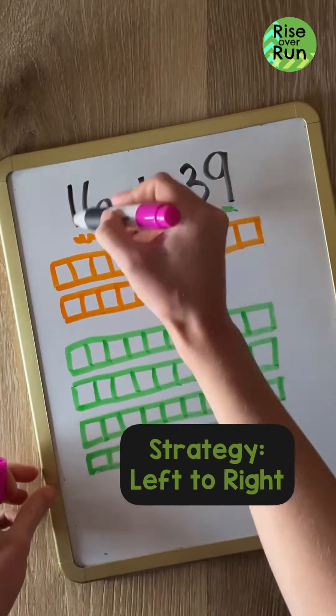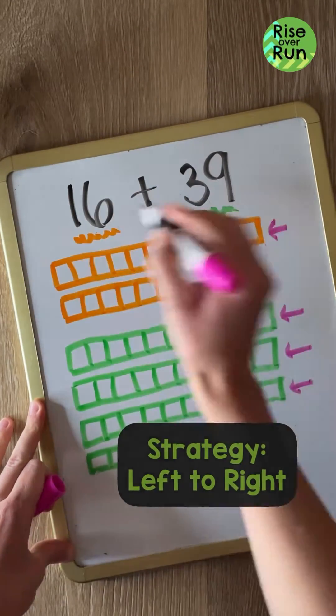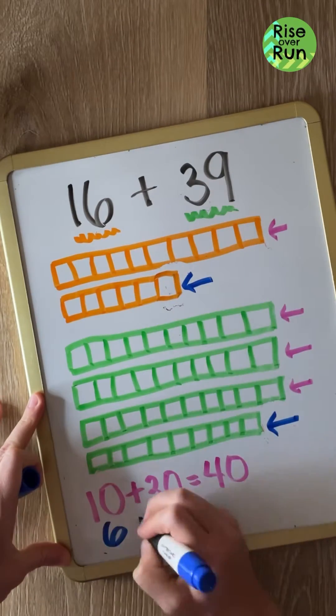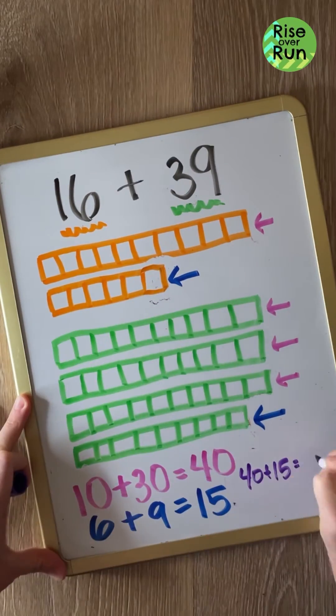Another strategy is adding left to right. We look in the tens place and see 10 plus 30 equals 40. In the ones place we have 6 plus 9 equals 15 for a total of 55.